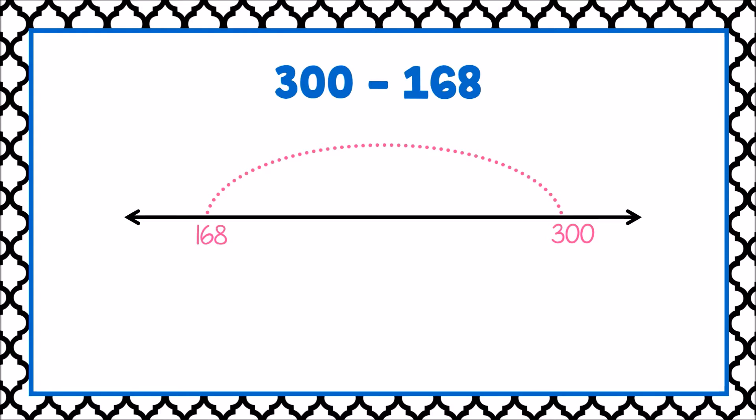In order to avoid regrouping, I can adjust one number to a friendly number. The number 300 is tricky to work with because I would need to regroup across multiple places. I could take away one from this number, making it 299.